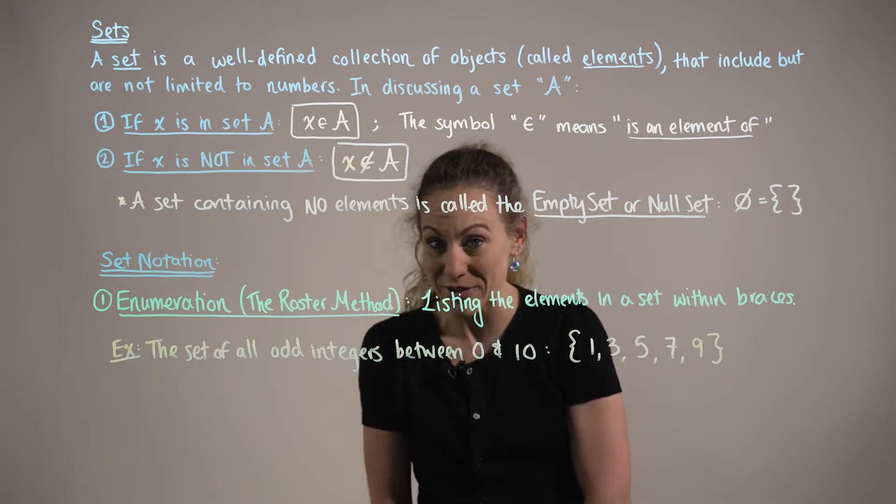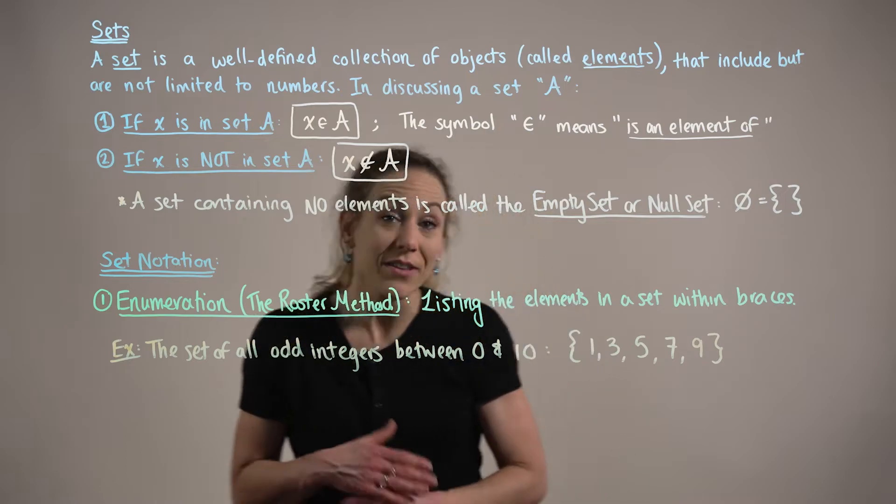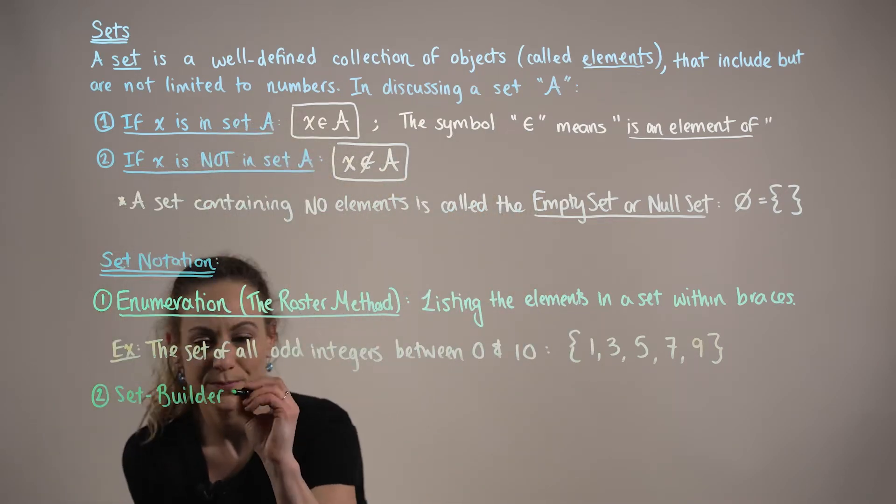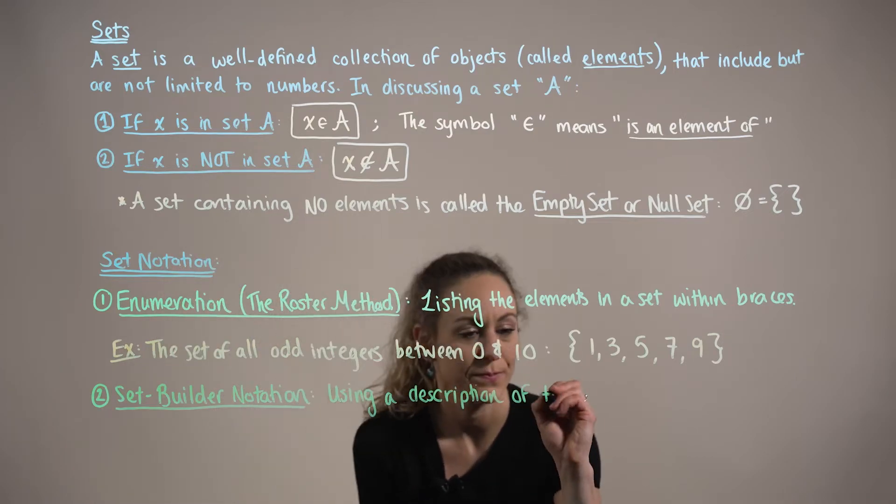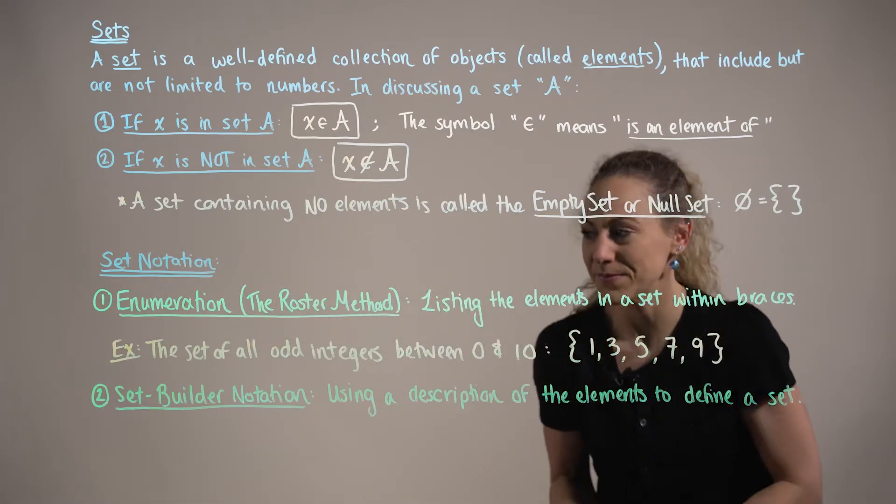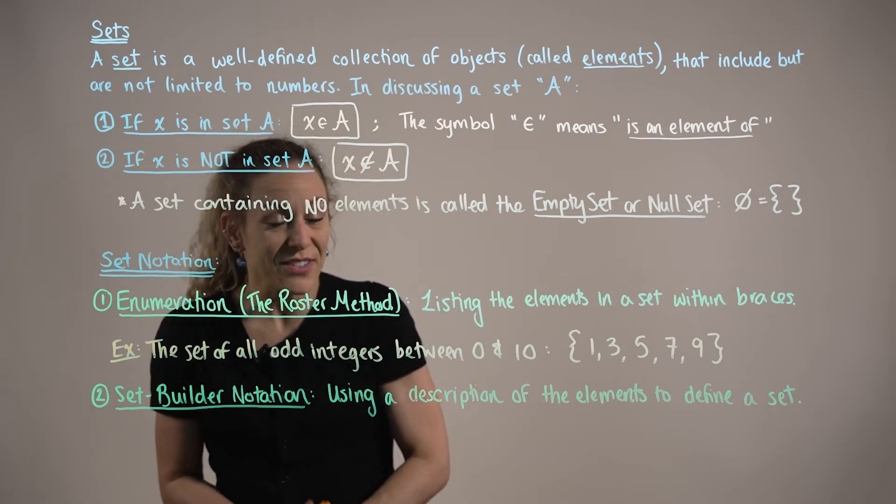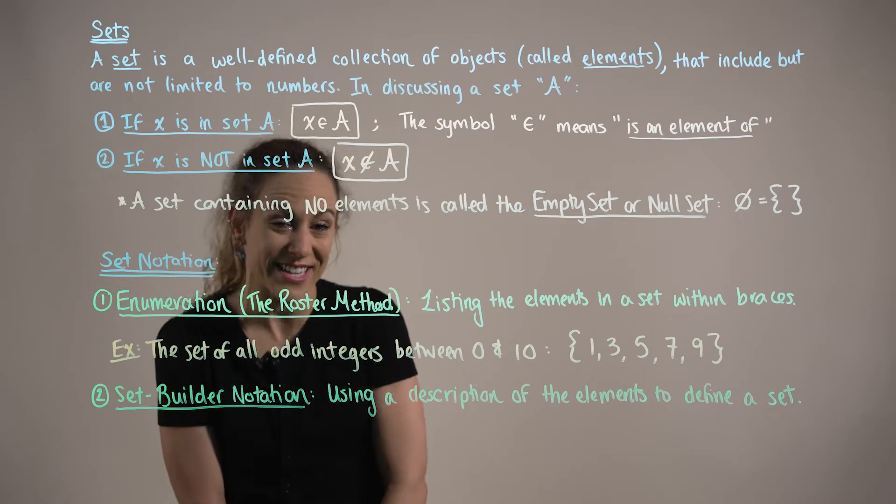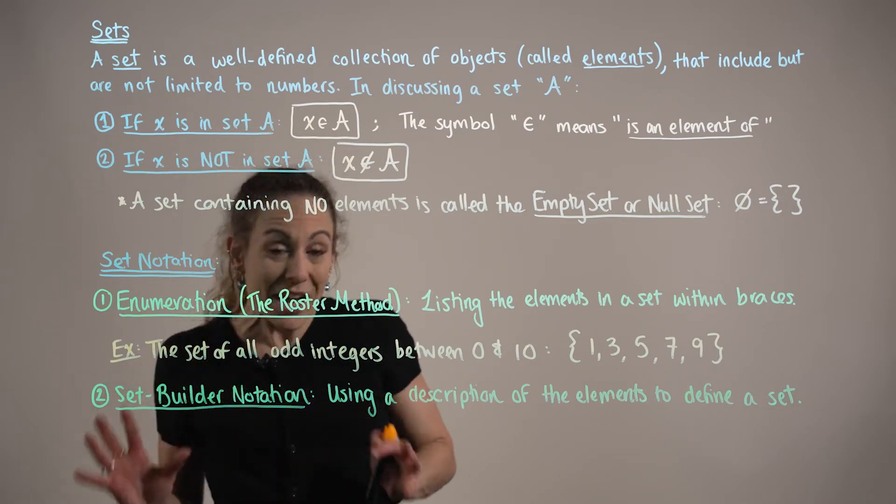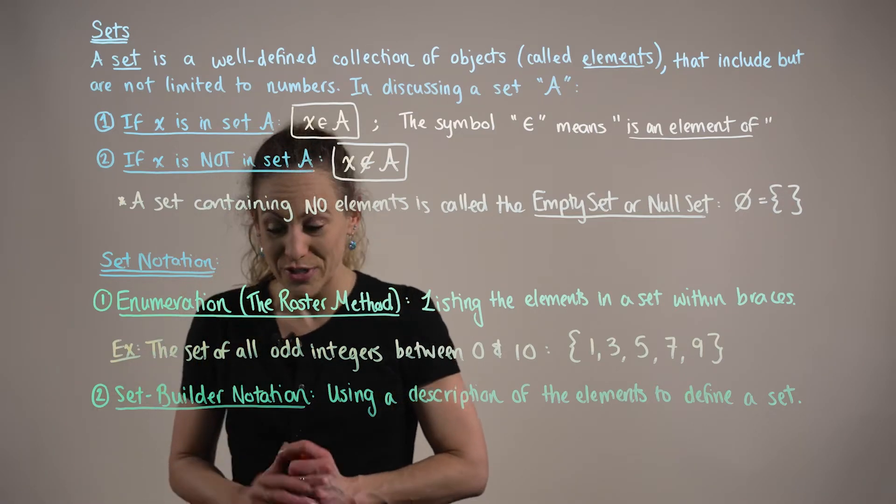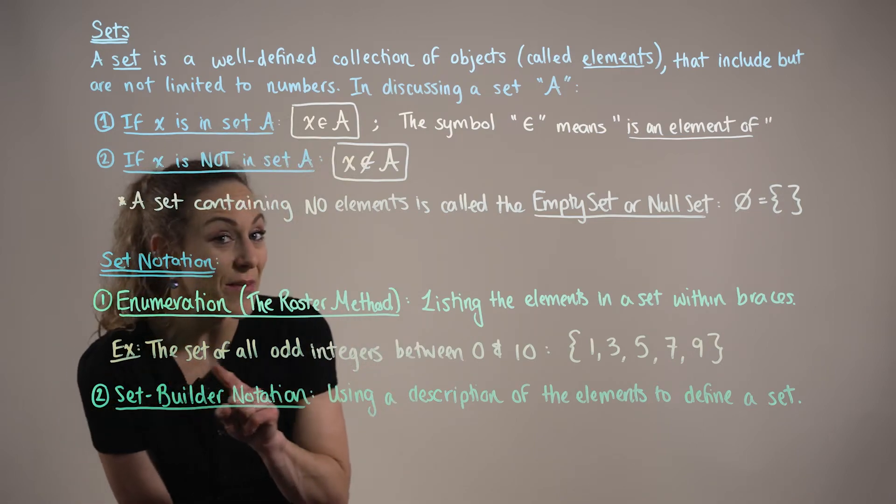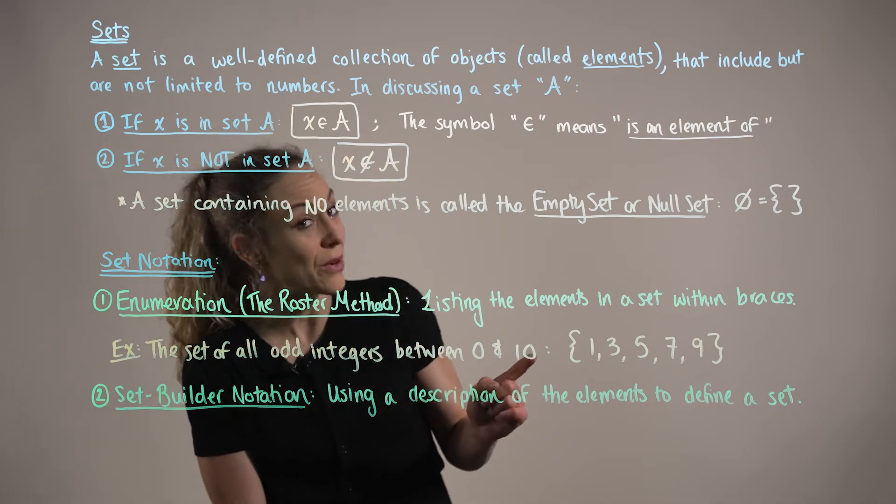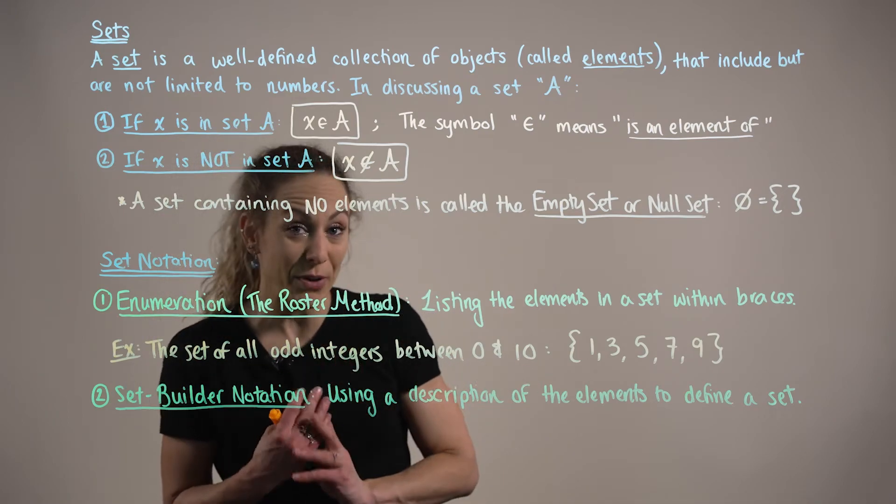An alternative way to use set notation is what we call set builder notation. Set builder notation asks us to use a description of the elements to define a set. Again, to help us better understand this set builder notation, let's consider the same example as case 1, but let's write the set of all odd integers between 0 and 10 using a set builder form.